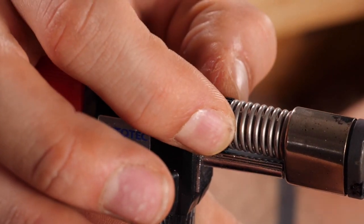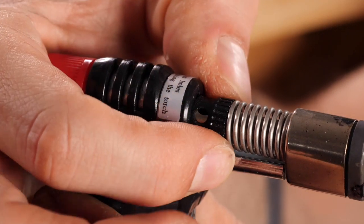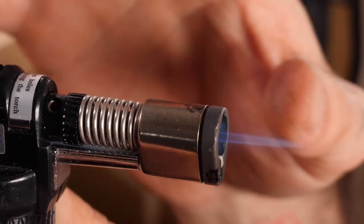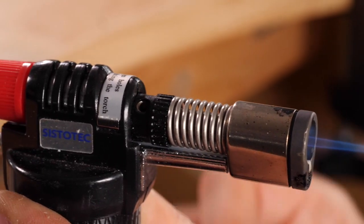So when I'm going to solder, I make sure that this hole is open and the torch takes in oxygen as much as the flame needs.